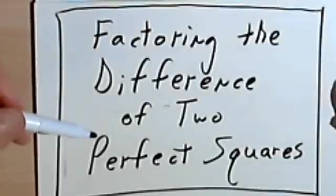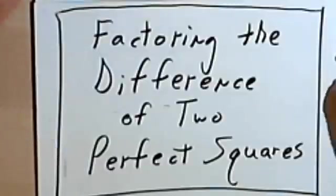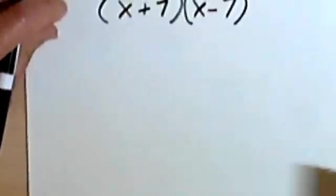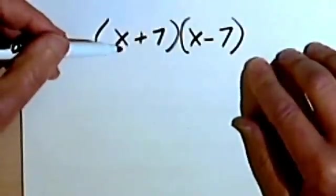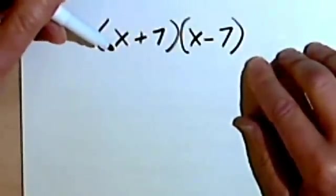This video is going to be about factoring the difference of two perfect squares. So I want to start out by multiplying two binomials together and show you how we get to the problem we're trying to solve.